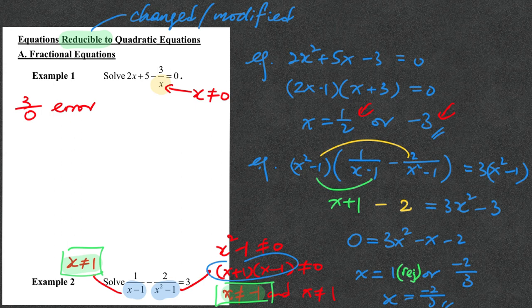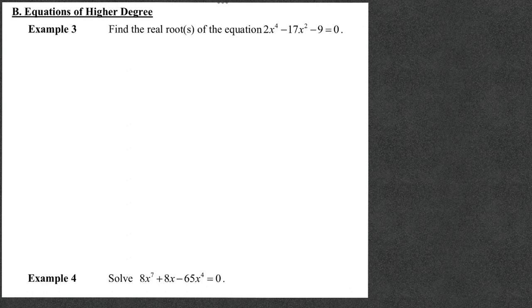This is the way you turn a question involving fractions into a quadratic equation which is solvable. The only thing you have to be alert about is checking the denominator to see what values x cannot take. Next, we come to equations with higher degree, and we are going to see how they can be turned into quadratic equations.